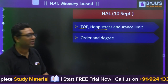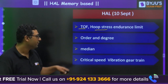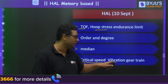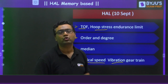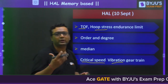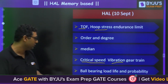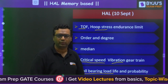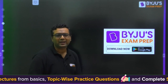Order and degree of differential equations were asked. From statistics, probability had no question. Critical speed in vibration was there, along with one to two more vibration questions. There was also a question on gear trains where you needed to identify the type of gear train, and a question from the load-life relationship of ball bearings.